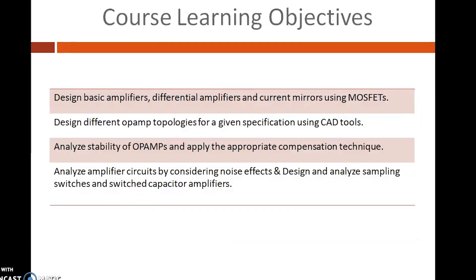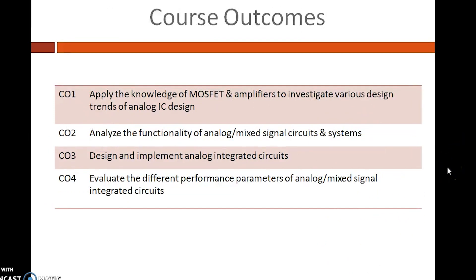The objectives of learning this course are: design basic amplifiers, differential amplifiers, and current mirrors using MOSFETs; design different op-amp topologies for a given specification using CAD tools; analyze stability of op-amps and apply the appropriate compensation technique; analyze amplifier circuits by considering noise effects; and design and analyze sampling switches and switched capacitor amplifiers. The course is designed to cover 44 lecture hours.